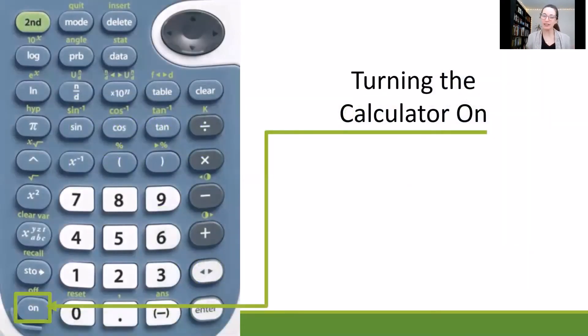So, turning the calculator on. Very simple, you'll find an on button down in the bottom left hand. So if your calculator, when you receive it, specifically if you receive the physical version of it, is not yet on, make sure you start there.